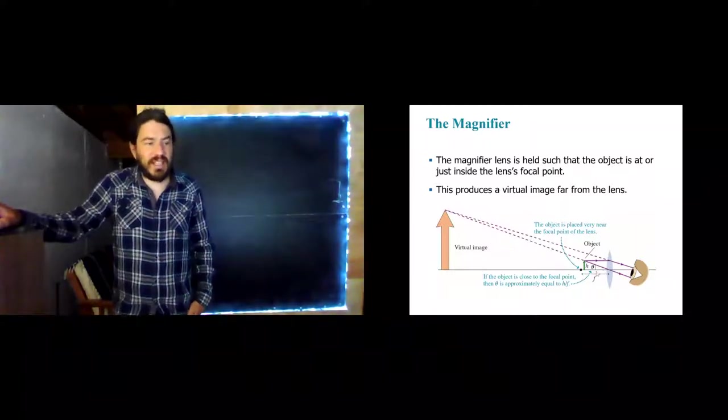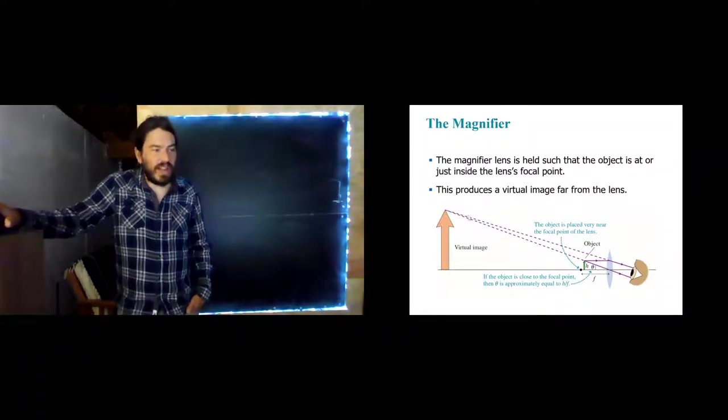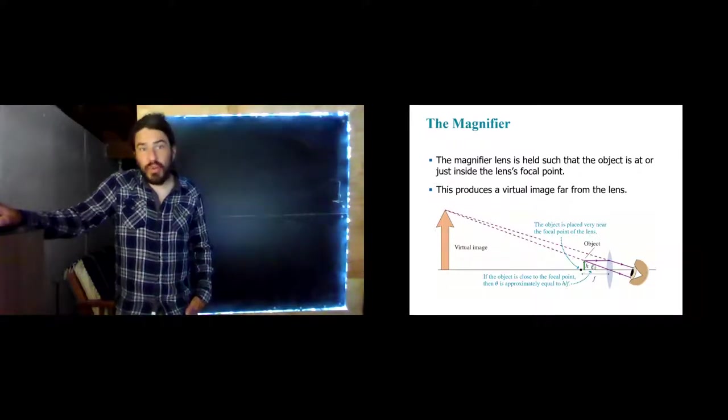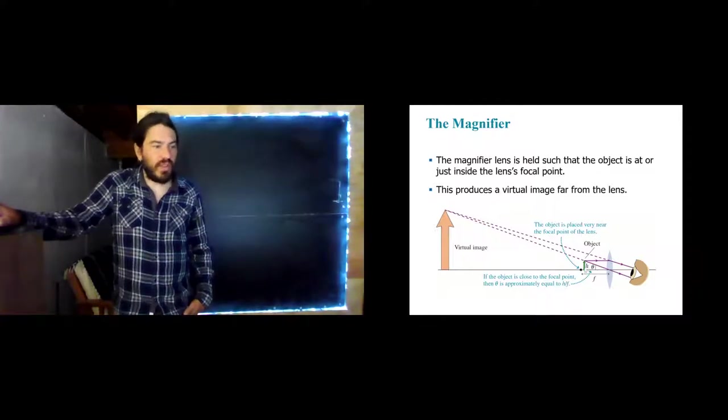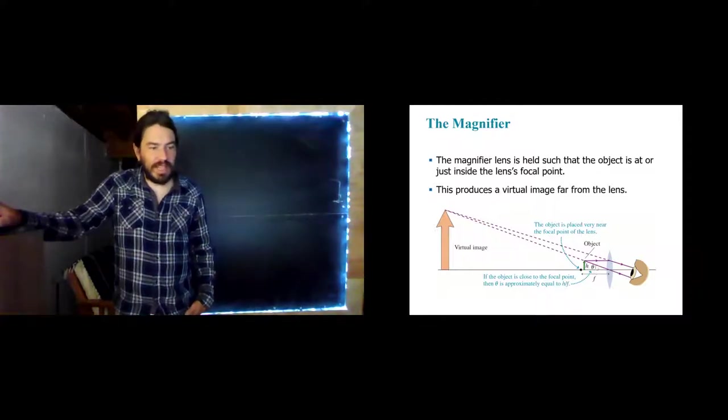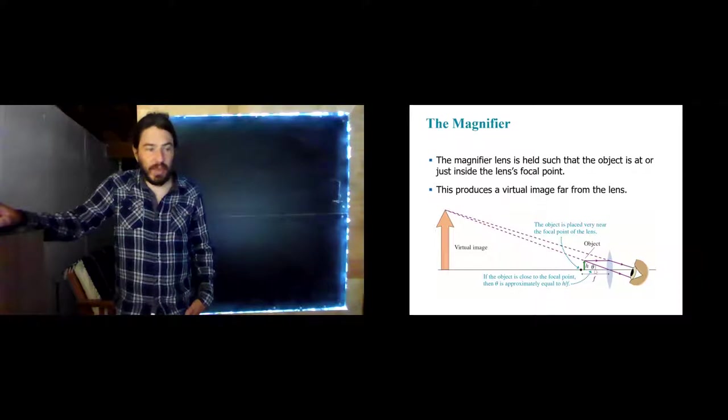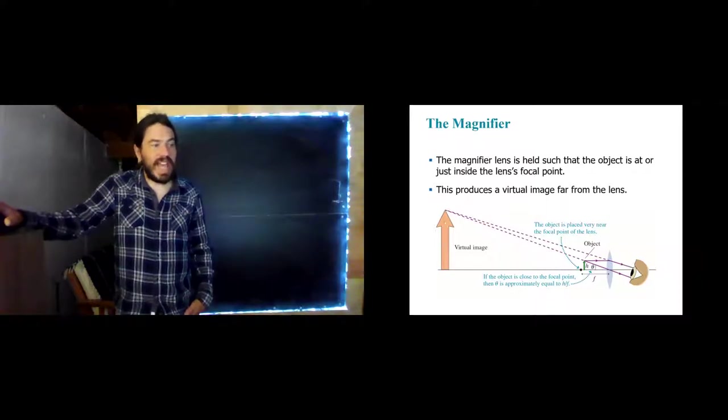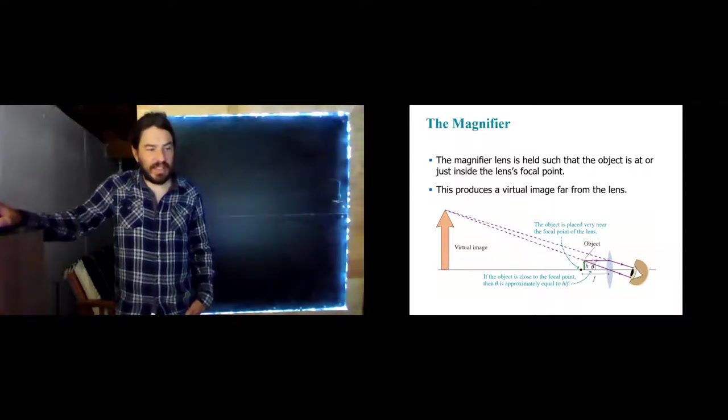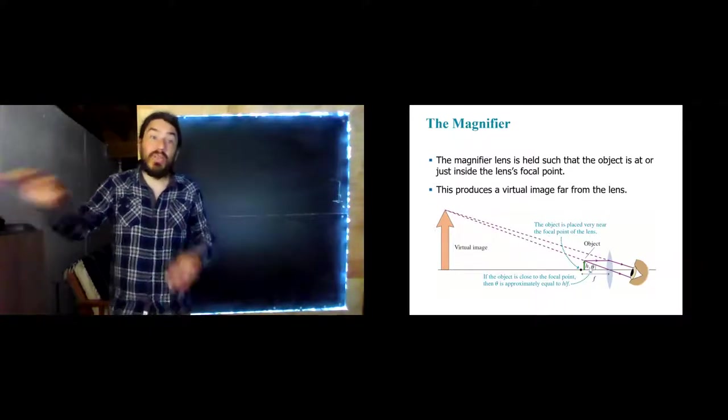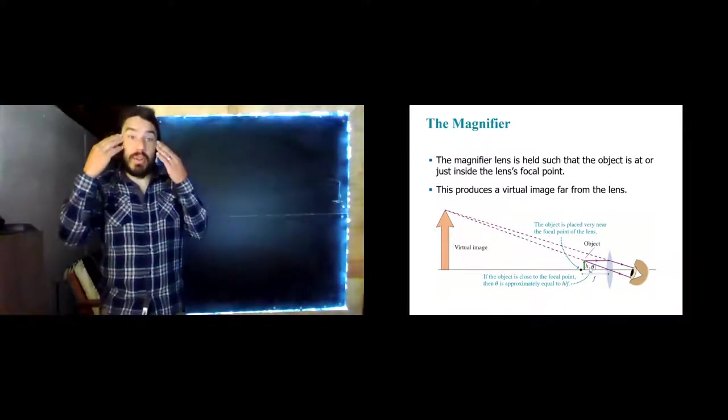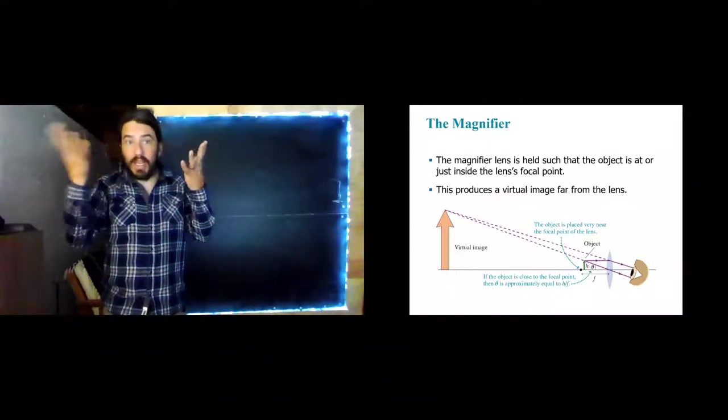But it sort of makes it taller faster than it makes it farther away. The net effect is that the angle that this object, that this image, excuse me, subtends is greater through the magnifier than it is not through the magnifier. So the original object would have subtended an angle like this in our eyeball. However, the magnified image subtends this angle here. It is a much greater angle. And therefore, it's filling up more of our vision and producing a larger image on our retina.